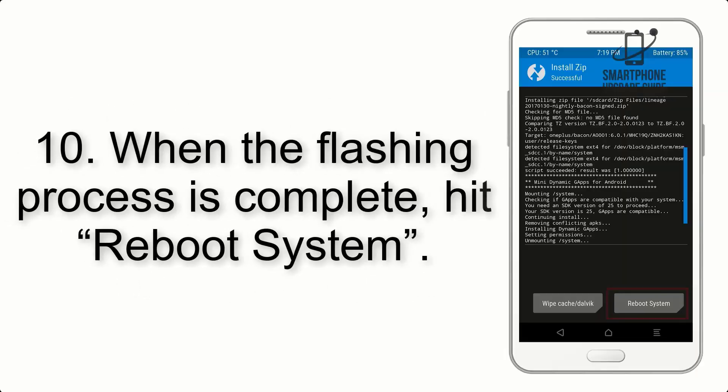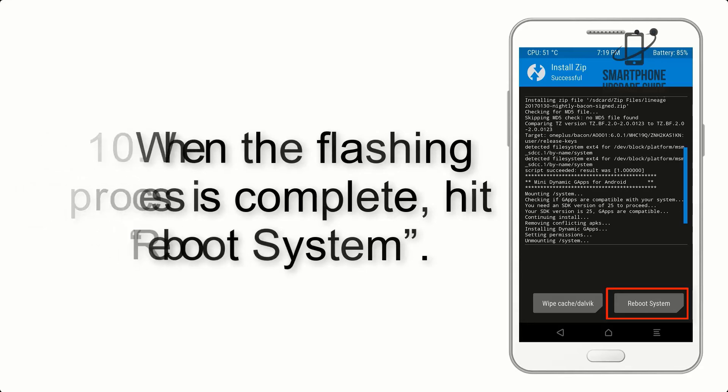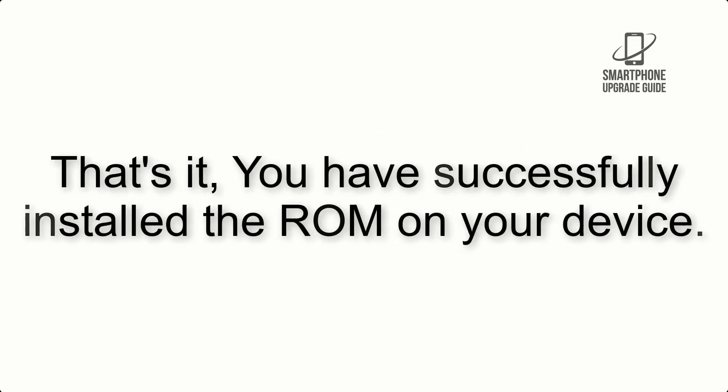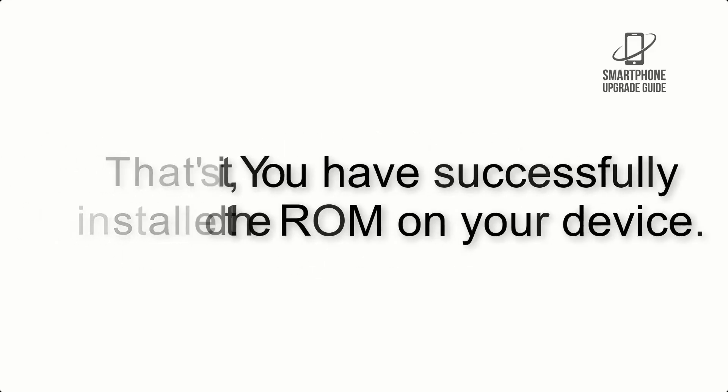Step 9: After GApps flashing completes, select Wipe Cache and Dalvik from the bottom left side of the screen and swipe to wipe. Step 10: When the flashing process is complete, hit Reboot System. That's it — you have successfully installed the ROM on your device.